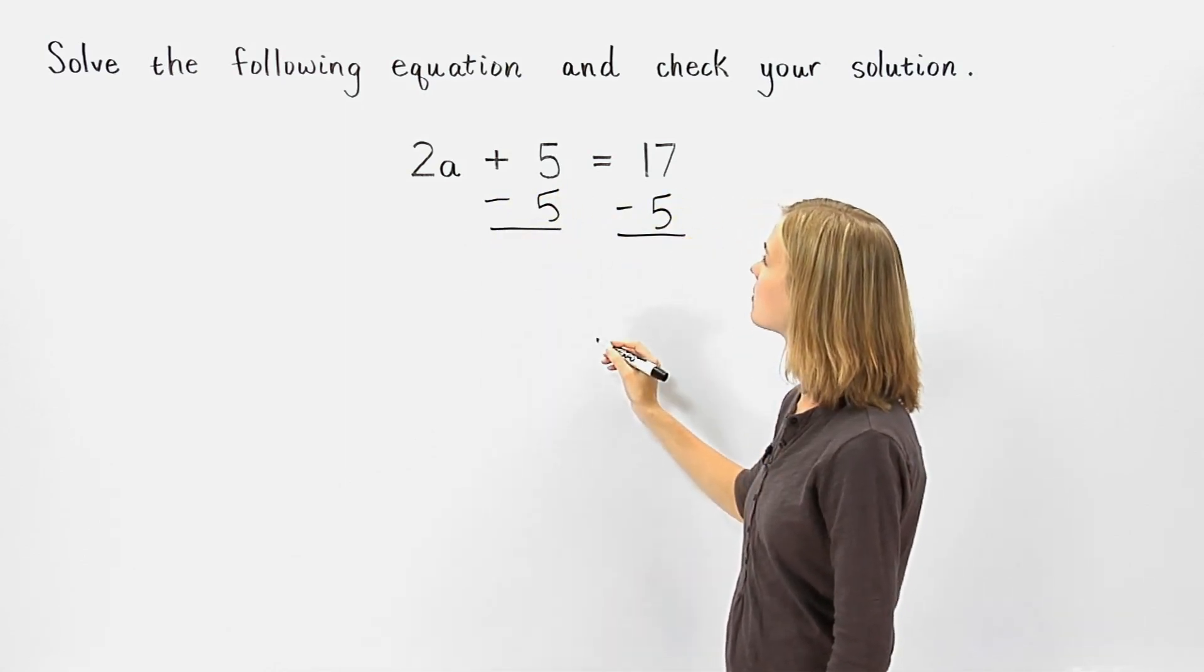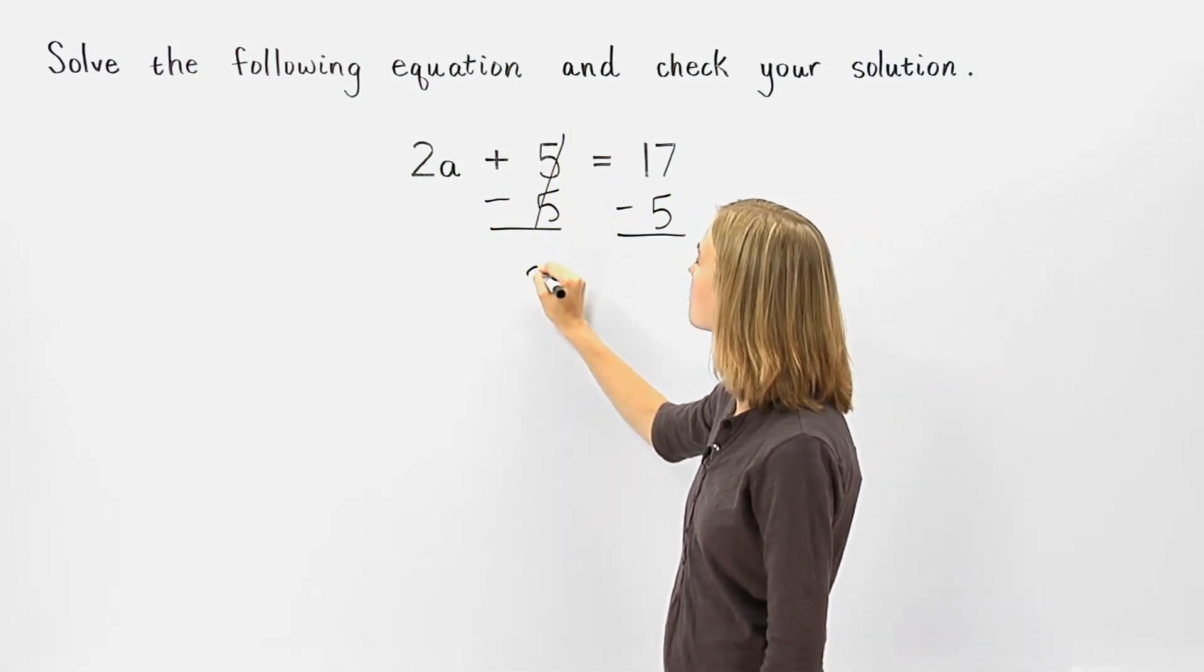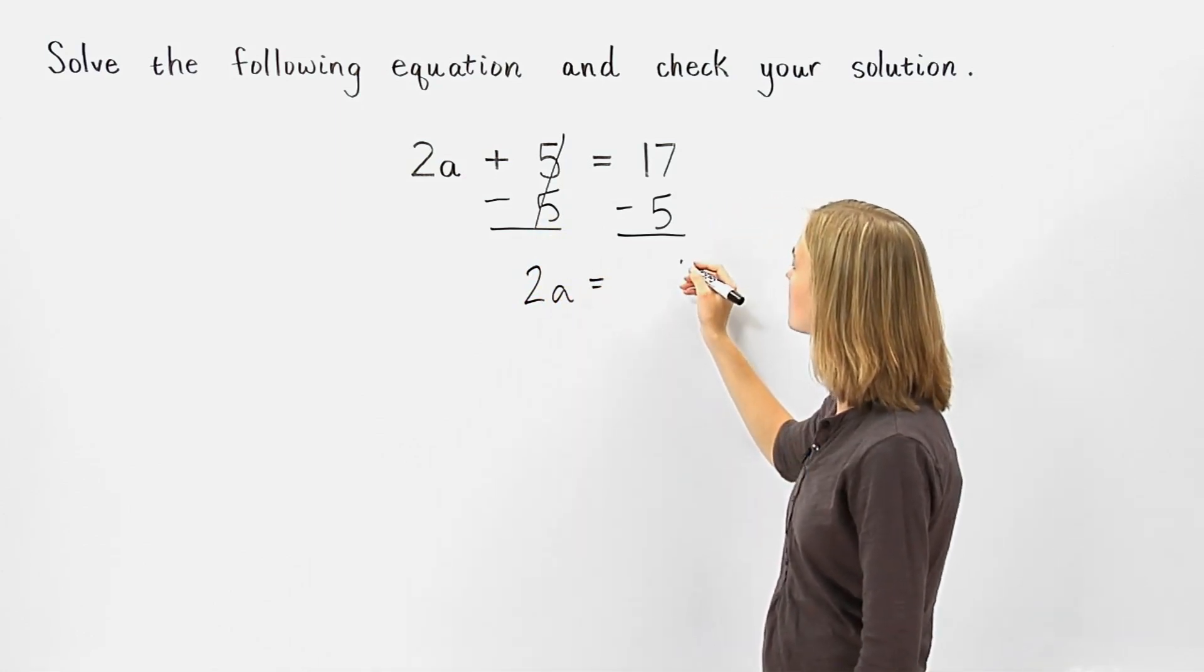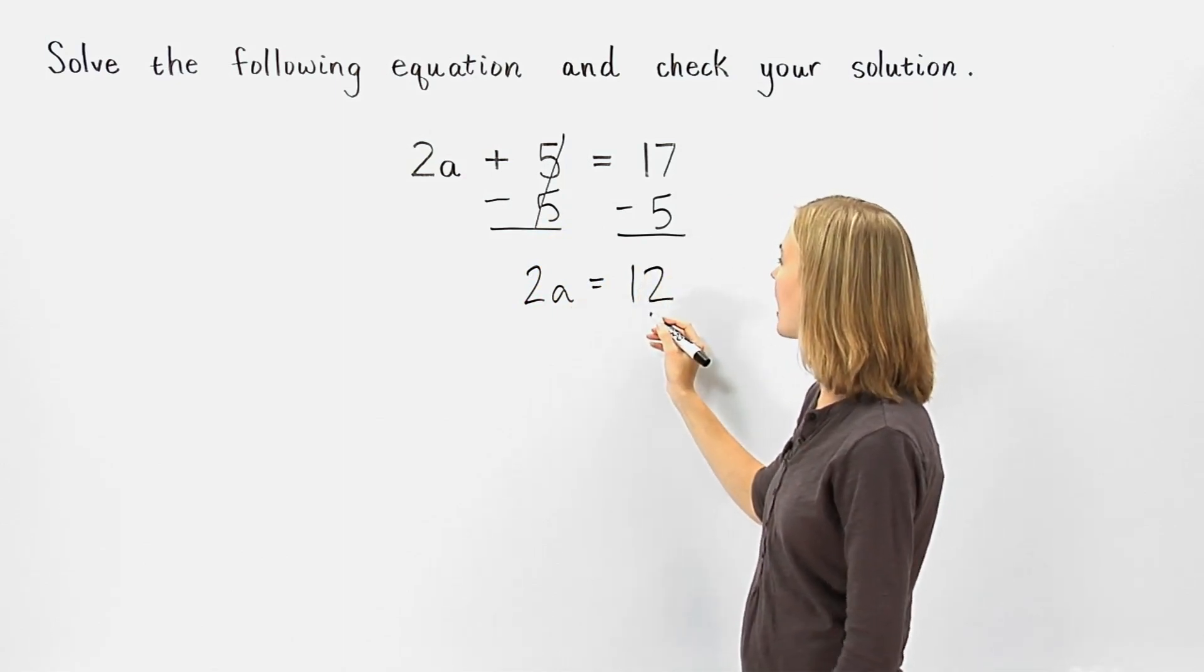On the left side of the equation, the positive 5 and negative 5 cancel each other out, and we have 2a. And on the right side of the equation, 17 minus 5 is 12. So we have 2a equals 12.